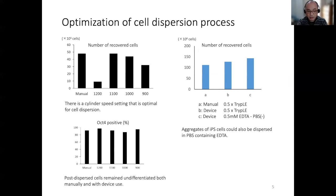Next, OCT4 markers were analyzed by FCM to confirm that the dispersed cells remained undifferentiated. As a result, it was confirmed that the undifferentiated state was maintained at any rotation speed of the cylinder, as in the manual process.